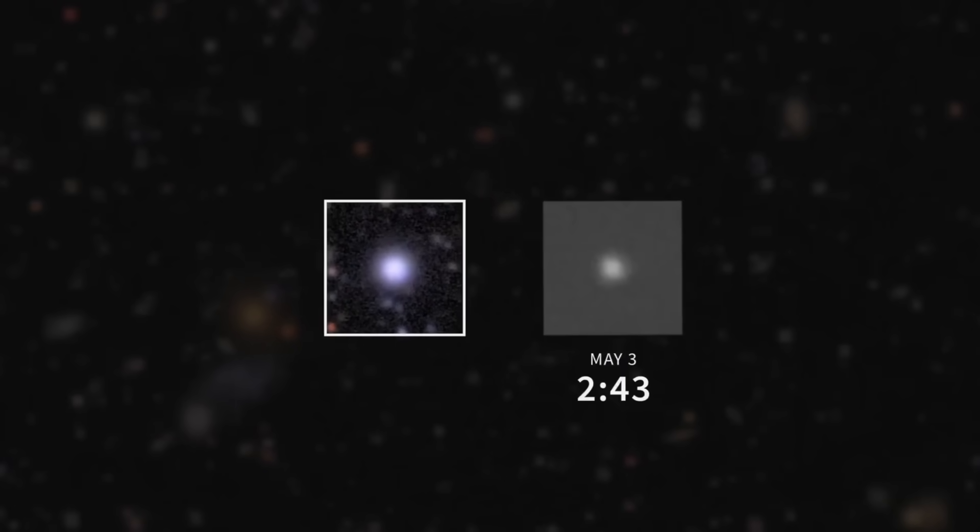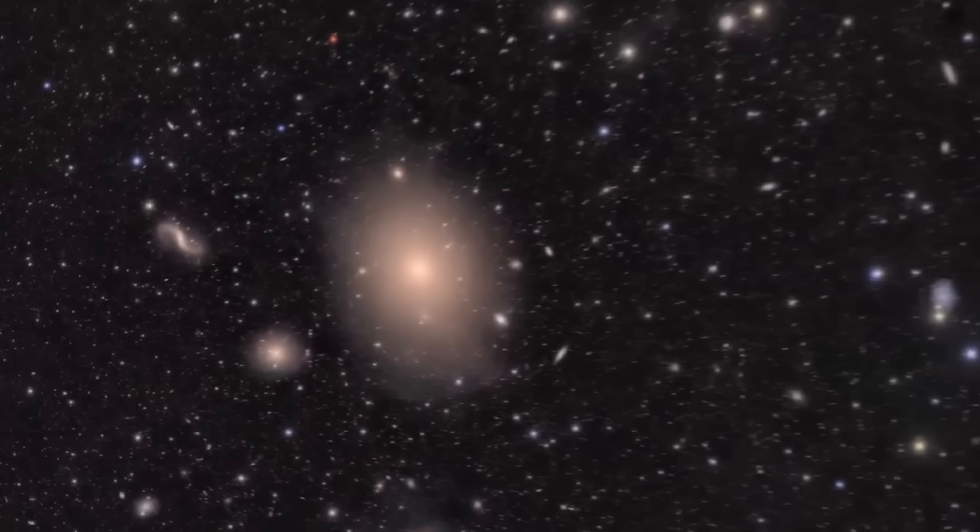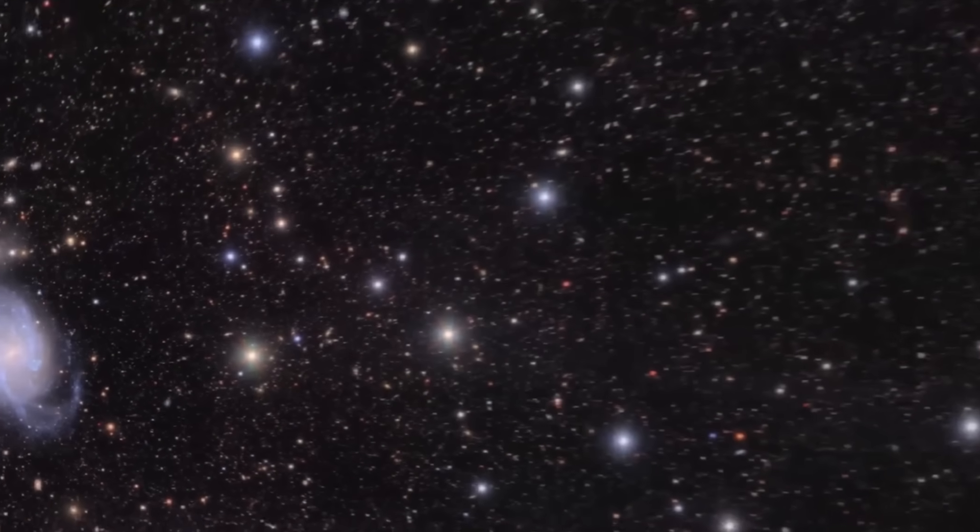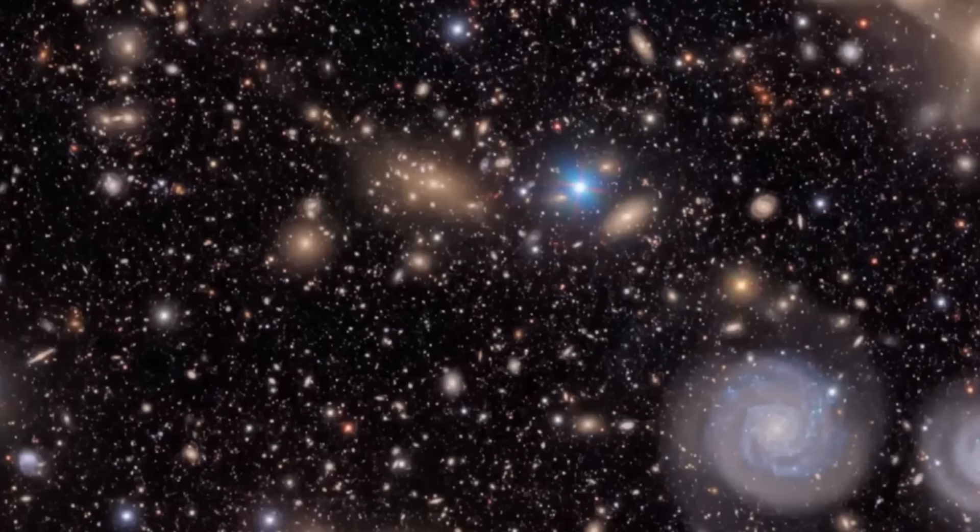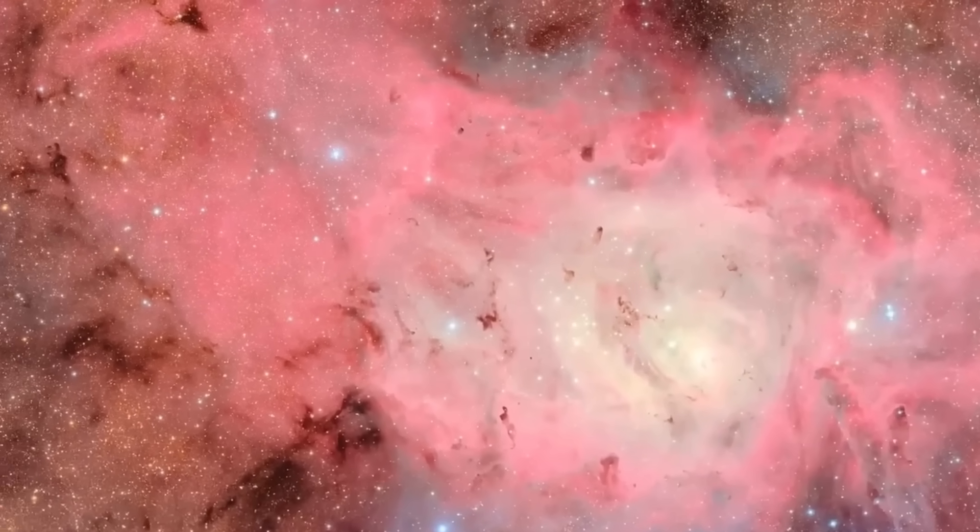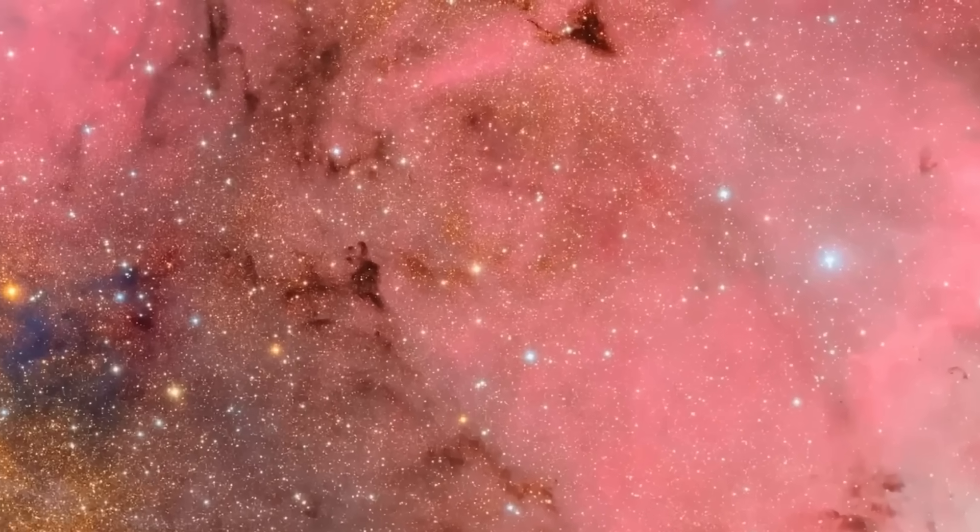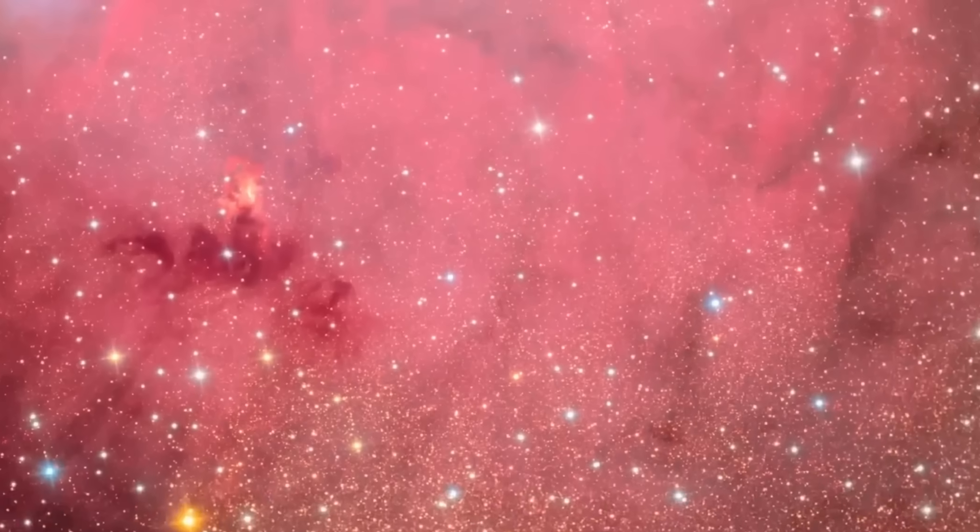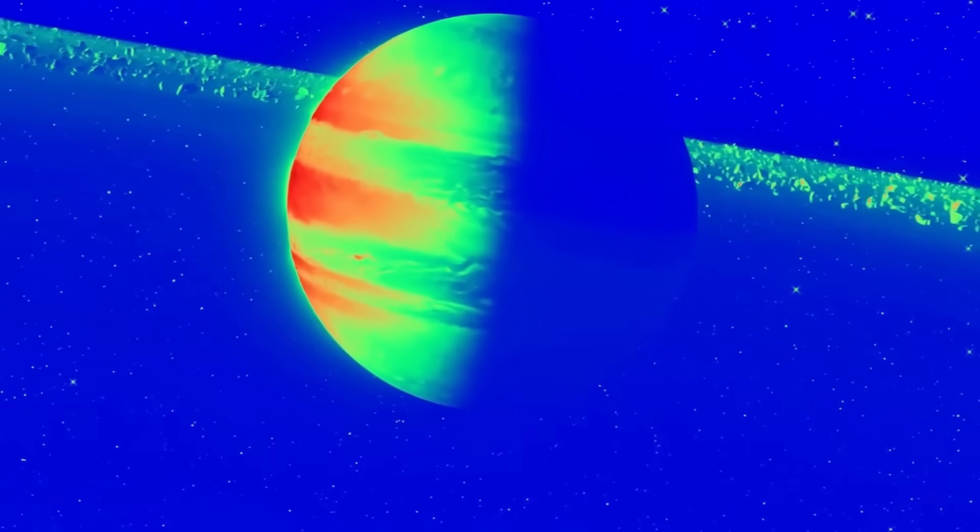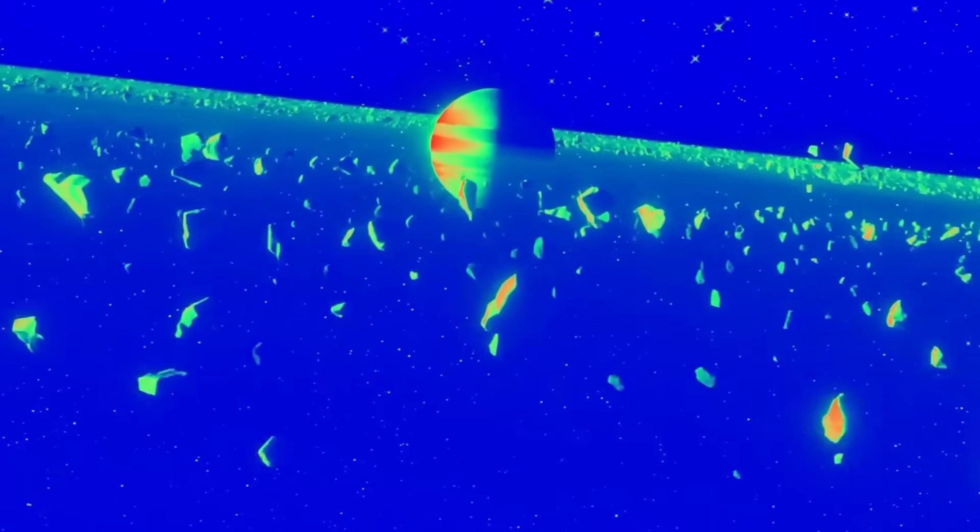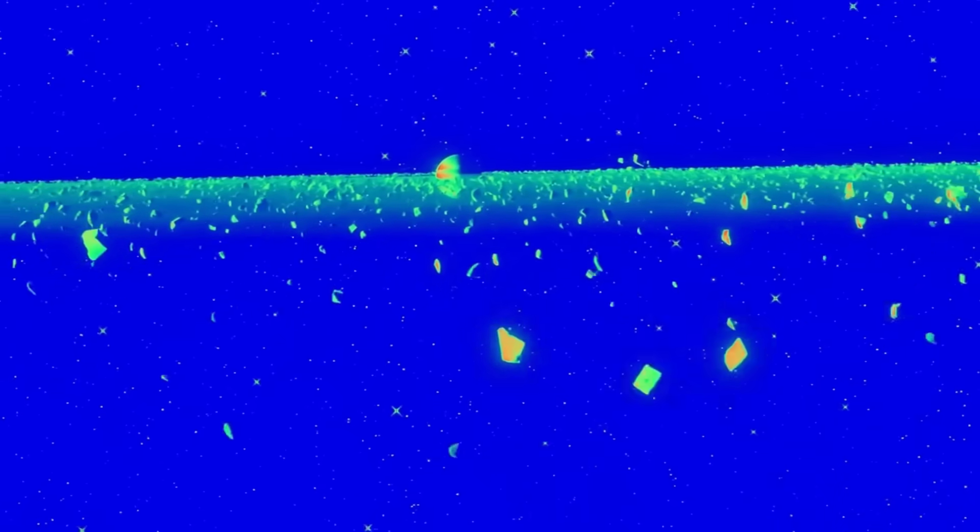Over billions of years, those galaxies pull together into clusters, filaments, and webs that span the observable cosmos. But Webb has begun detecting hyperstructures, massive galactic webs and connections, far earlier than should be physically possible. These aren't accidents of light or observational noise. They are measurable, traceable, and consistent across deep fields, and the mathematics doesn't hold up.